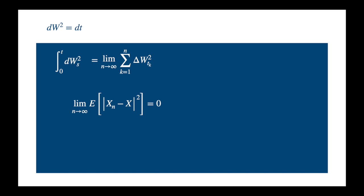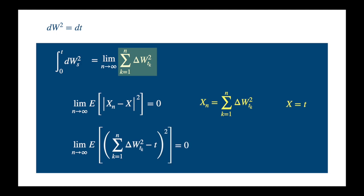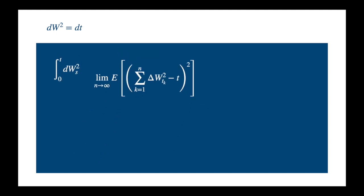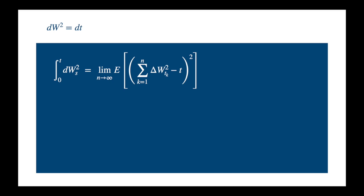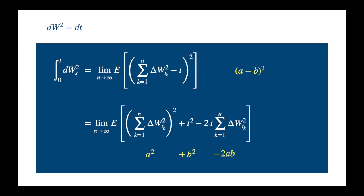Applying this definition to our problem is also very easy. The finite sum is the sequence, and we claim that the limit is the length of the interval. So we replace x_n by the sum and x by t. Now this is just a minus b squared with a equal to sum of delta W squared and b equal to t. So we get, which is just a squared plus b squared minus 2 times ab.